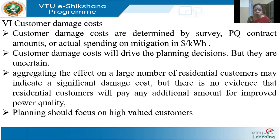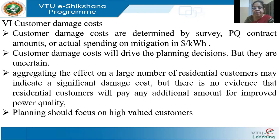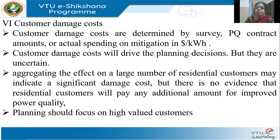Customer damage costs drive the planning process for power quality issues, but they're uncertain. We can aggregate a large number of customers for damage, but every customer may not be ready to pay for improved power quality. For instance, Bescom might ask each of 1,000 houses to contribute 50,000 rupees to invest in equipment that will improve power quality and protect electrical appliances. A customer with a 1.5-lakh home theater TV might prefer to pay 50,000 for long-term protection; another customer with an old TV might say 'let it go, I'm not ready to pay.' Different customers have different perceptions.